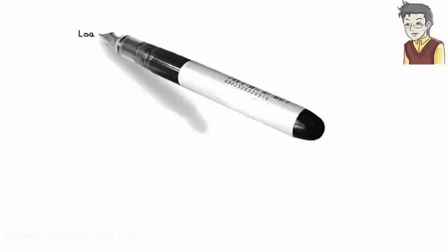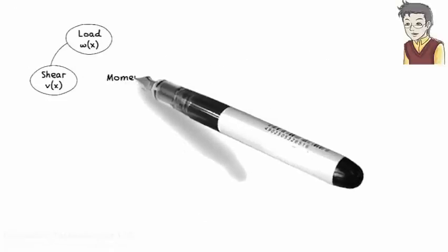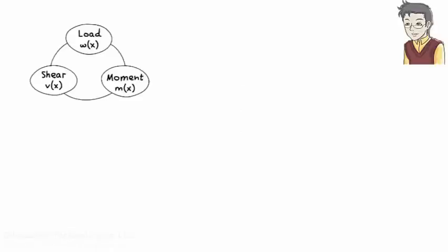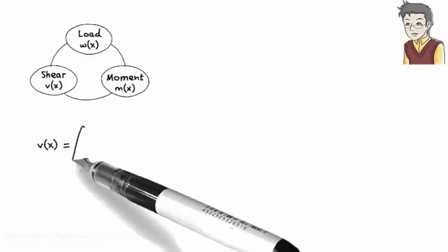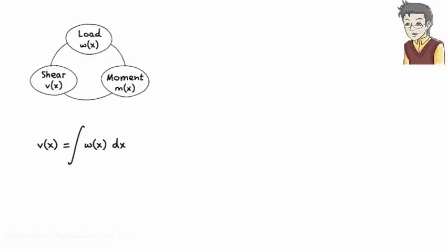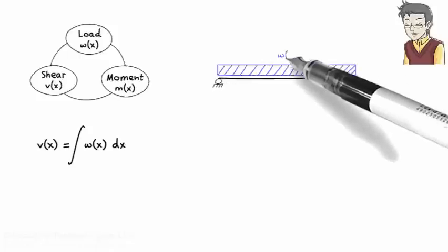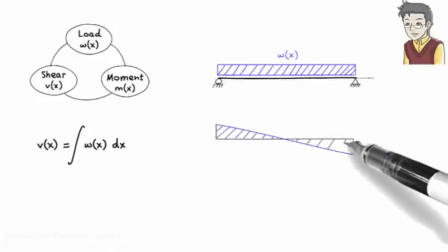To start, let's review the relationship between applied load and shear and moment in beams. Shear can be defined in terms of the integral of the load function: V(x) equals the integral of W(x), where W(x) is the load function and V(x) is the shear function. The same relationship can be expressed graphically using load and shear diagrams. For example, if W(x) represents a uniformly distributed load, then the load diagram looks like this, and the shear diagram looks like this.